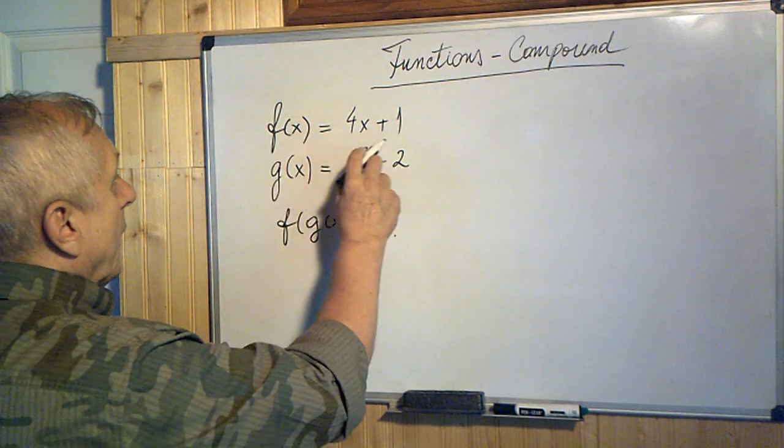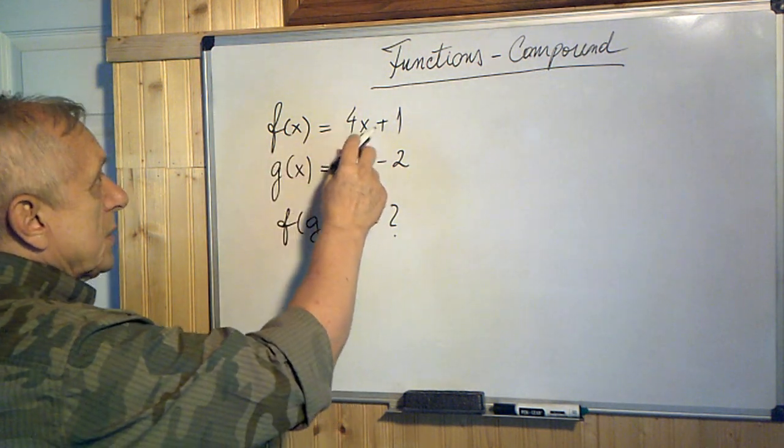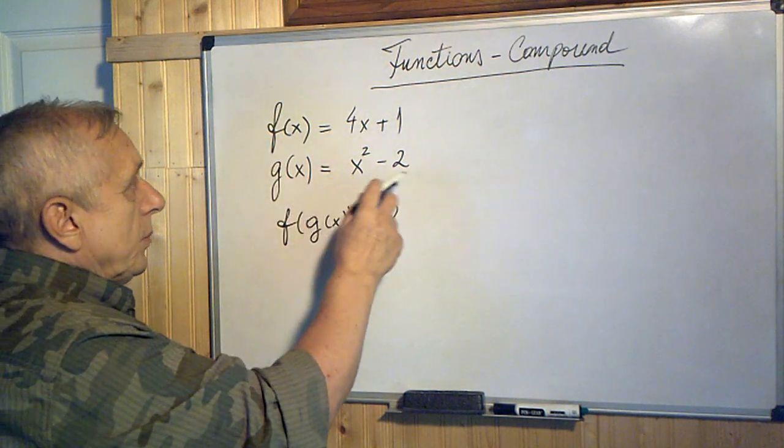We have a compound function here. So f of x equals 4x plus 1. g of x equals x squared minus 2.